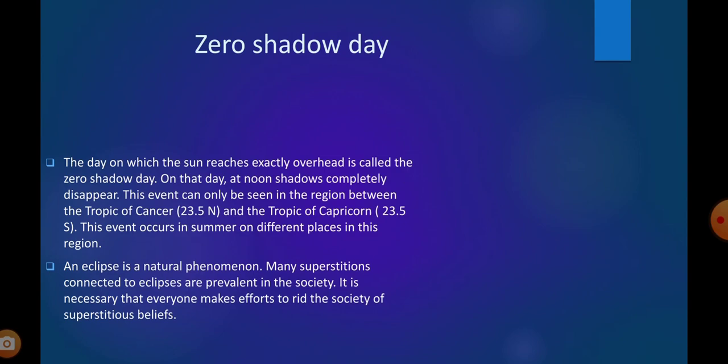Zero shadow day. A day on which the sun reaches exactly overhead is called the zero shadow day. On that day, at noon, shadows completely disappear. This event can only be seen in the region between the Tropic of Cancer, 23.5 degrees north, and the Tropic of Capricorn, 23.5 degrees south. This event occurs in summer at different places in this region.